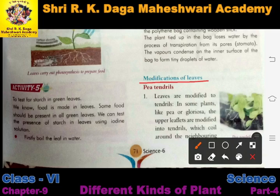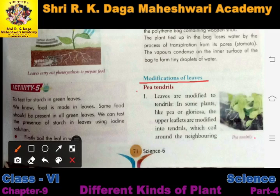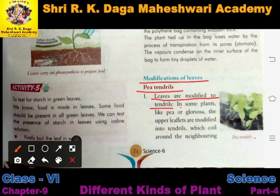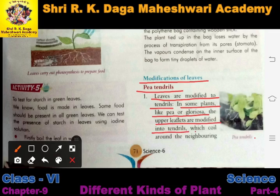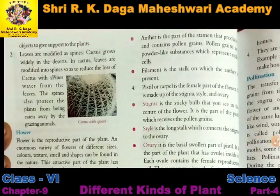Now the next topic we are going to study is modification of leaves — how leaves modify themselves and make changes so that they can help in the growth of the plant. First one is pea tendrils. Pea tendrils are a type of plant where leaves are modified to tendrils. In some plants like pea and gloriosa, the upper leaf parts are modified into tendrils.